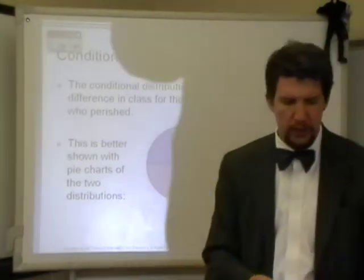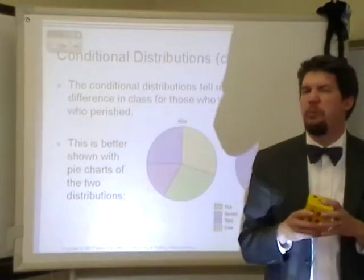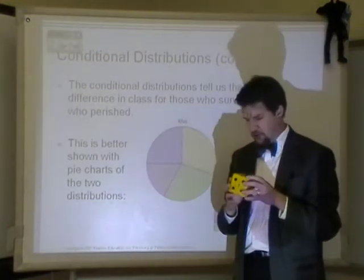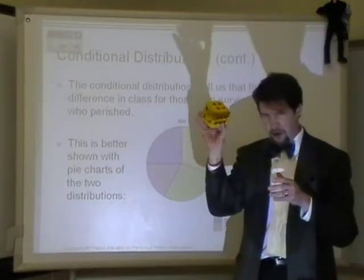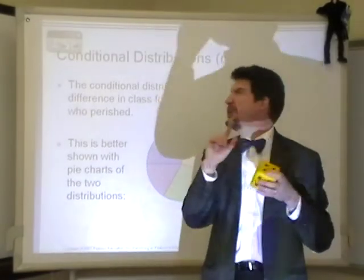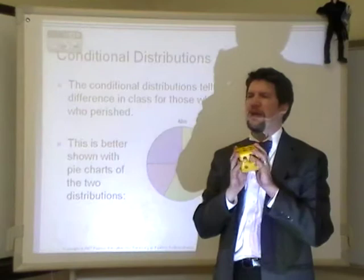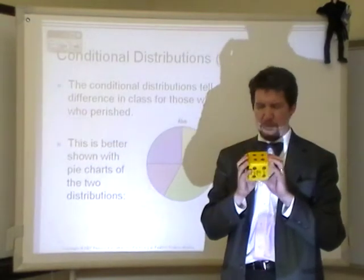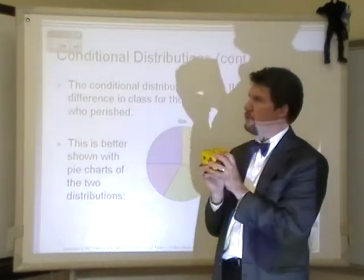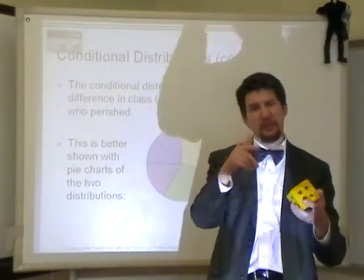Here's the example. It will serve our purposes. Here I have a fair die, it's six-sided. What's the probability that if I roll this die, I'm going to get a four? Well, if this die is fair, that probability would be one out of six. And you're right.